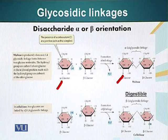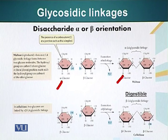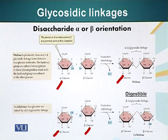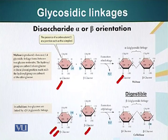We have talked about the bond between alpha glucose and beta glucose. Now let's look at a bond formed between two beta glucose molecules, shown in the lower part of the screen. Here a beta glucose is forming a bond with another beta glucose molecule. It is the same process — a water molecule is removed in a condensation reaction, and a bond is formed. Since the glucose on the left was in beta configuration, this bond will be called beta-1,4 glycosidic linkage.